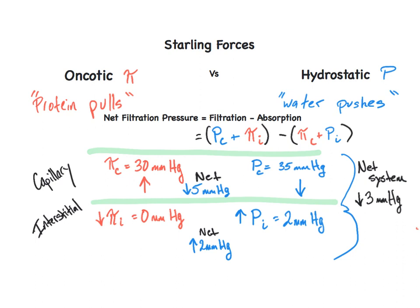This positive filtration means that there will be excess fluid circulating in the interstitial tissues that needs to be returned to the vasculature. This fluid is returned via the lymphatic system.